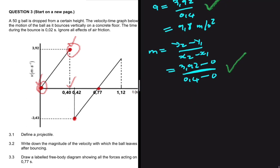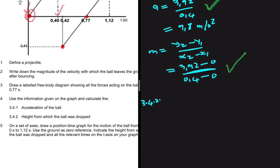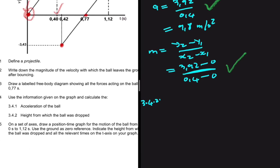For 3.4.2 we calculate the height from which the ball was dropped. Again there are two ways: equations of motion or the area under the graph. For displacement we use the area under the v-t graph; for acceleration we use the gradient. You need to know which to use when — we don't just calculate the gradient all the time.